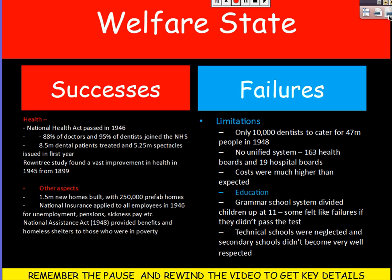Finally, the welfare state. Labour came in with the promise that from the cradle to the grave they would look after and protect you. The big successes were in health — the National Health Act was passed in 1946, setting up the NHS, which is still with us today. 88% of doctors and 95% of dentists joined. 8.5 million dental patients were treated and 5.25 million spectacles were issued in the first year alone. Additionally, 1.5 million new homes were built with 250,000 temporary prefab homes. National insurance now applied to all employees in 1946 for unemployment, pensions, and sickness pay. The National Assistance Act of 1948 provided benefits and homeless shelters to those in poverty.